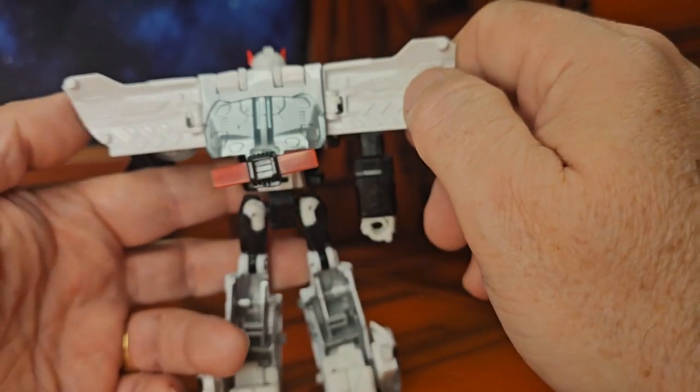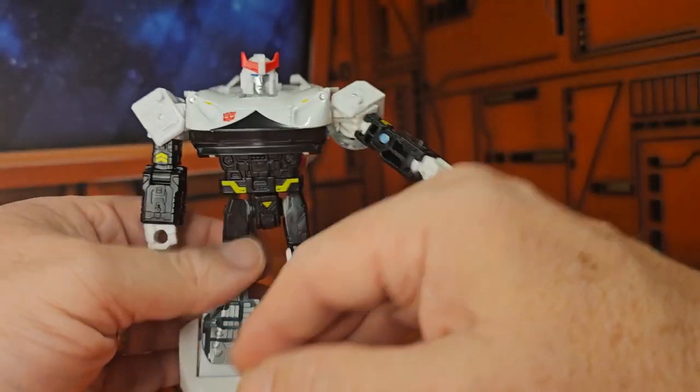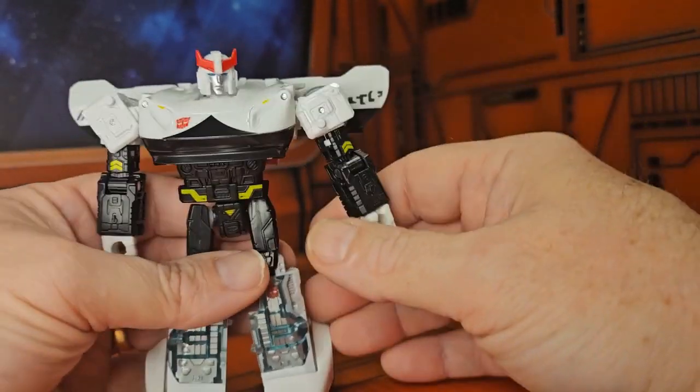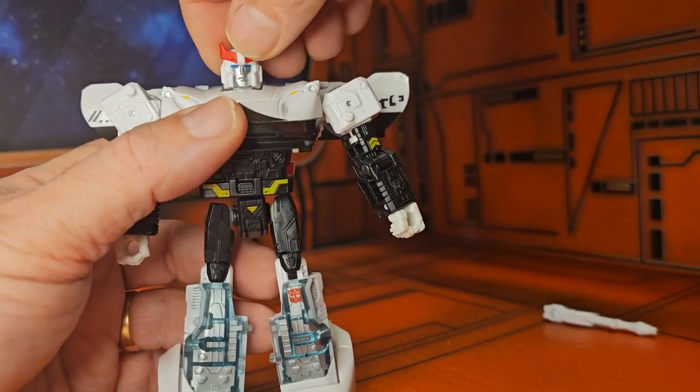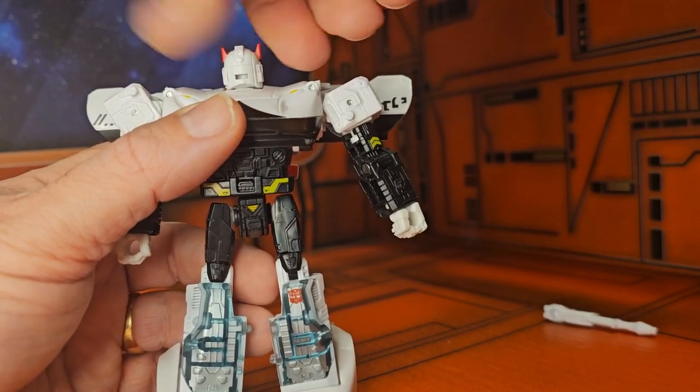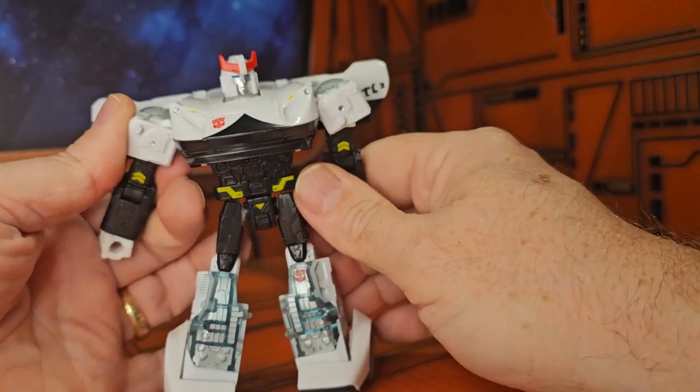Now he has these wings here. You can do the old-fashioned put them back so he looks more like the old Prowl we see in the cartoon, or put them out depending on how you want to display. Now his head can turn around, look up and down just a little bit, full 360 on the head rotation.